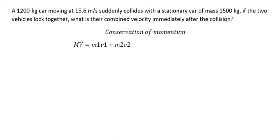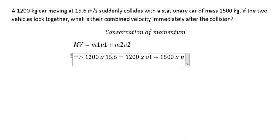Now we just put the numbers. We have capital M is 1200 multiplied with 15.6. M1 is the car number one after collision, that's 1200. And we have V1. We have 1500, V2.